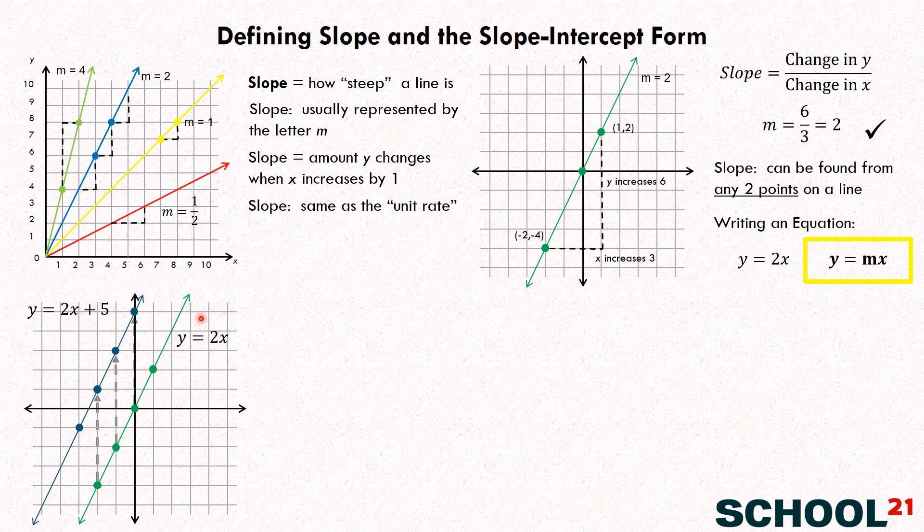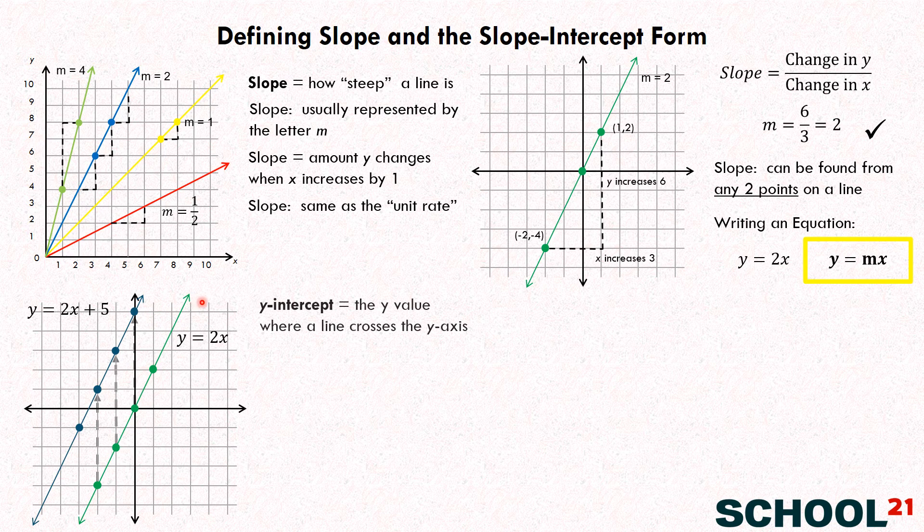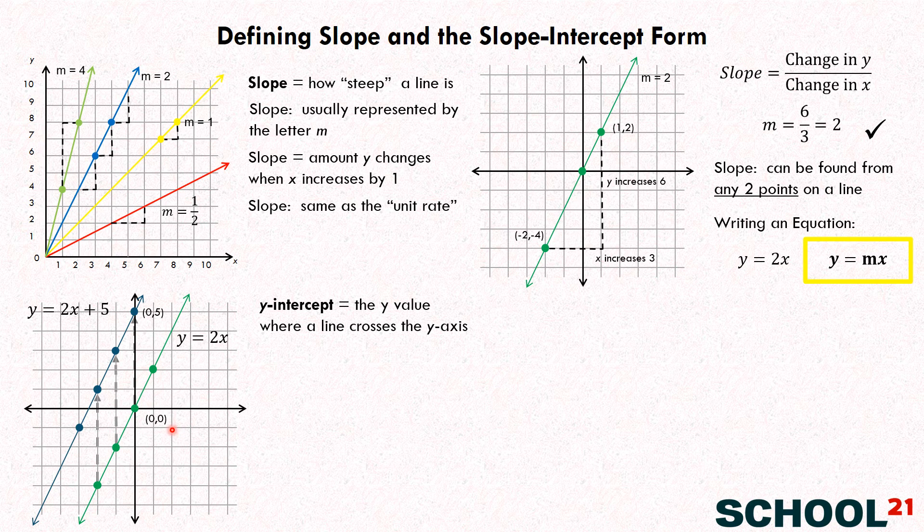So, what we're talking about here really, when you think about it, is something called the Y-intercept. And that's the Y value where a line crosses the Y-axis. So, let's go ahead and put on the graph here the two Y-intercepts. So, here, the Y-intercept is five, because it crosses the Y, this line crosses the Y-axis at zero, five. Does that make sense? Yeah. And what's the Y-intercept down here? Zero, zero. Right. So, the Y-intercept is zero, because it crosses at zero, zero.